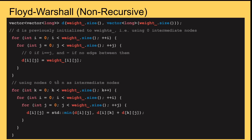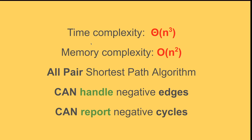The first few lines just initialize the matrix: if i equals j, initialize to zero; if there's no edge, initialize to infinity or a very large integer. As a summary of properties: we have three nested loops so runtime complexity is Θ(n³); memory complexity is O(n²) for the n×n matrix. It's called an all-pairs shortest path algorithm since we compute the shortest path between every i and j.